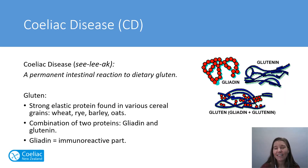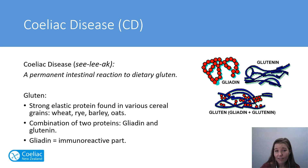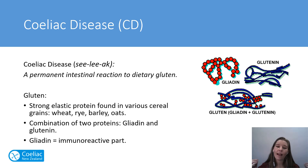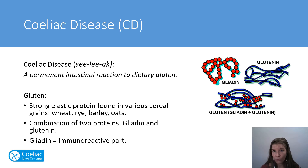Celiac disease is a permanent intestinal reaction to dietary gluten. Gluten is a protein found in various cereal grains including wheat, rye, barley, and oats. Gluten is actually made of two proteins: gliadin and glutenin. When they link together, they create a really strong elastic protein that is characteristic of that chewiness found in gluten-containing grains, which is also why it's used in a lot of processed foods. The gliadin part is thought to be immunoreactive — that's the part that triggers the reaction we see in people with celiac disease.